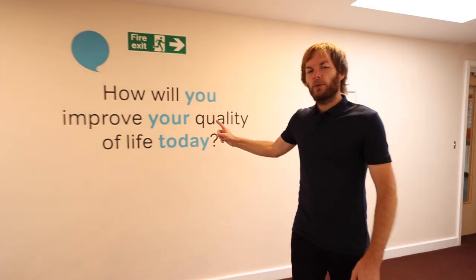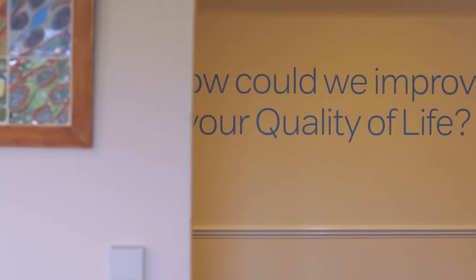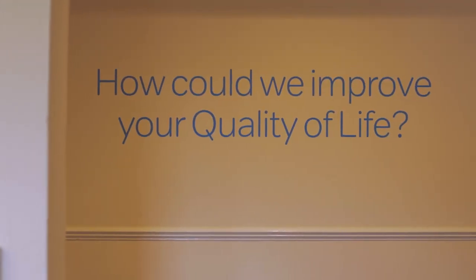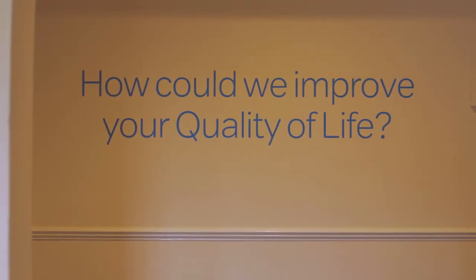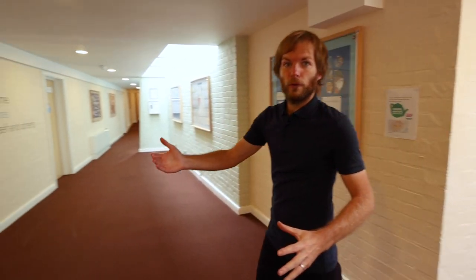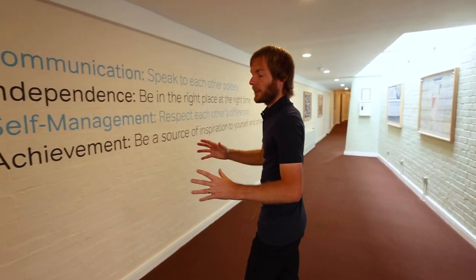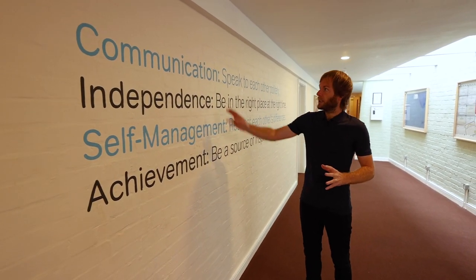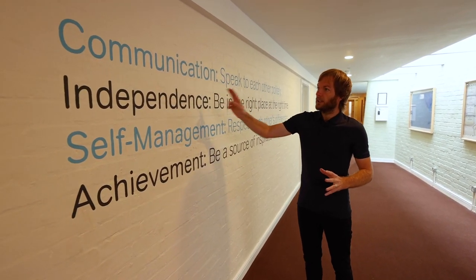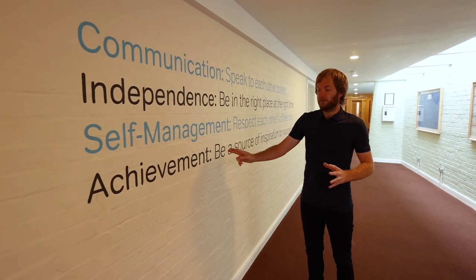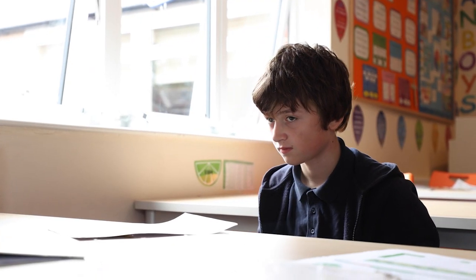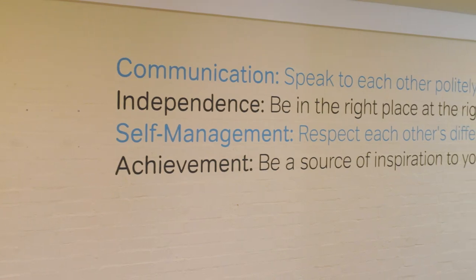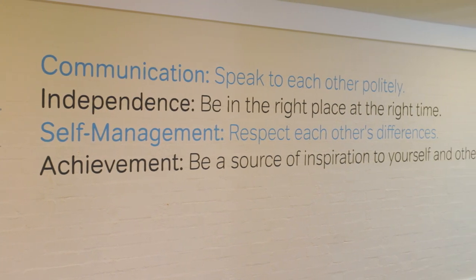At the core of everything we do is quality of life, and the school has developed a quality of life programme to help our students and their families during the time they're with the school, and hopefully that will follow through for the rest of their lives. When students are at school there are four key areas we're focused on at all times: communication, independence, self-management, and achievement. Throughout the students' time at the school they'll always be working to develop their skills in each of those areas.